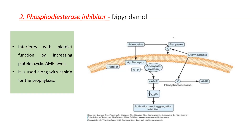The second class is phosphodiesterase inhibitors; the example is dipyridamole. Dipyridamole inhibits phosphodiesterase, which is involved in the breakdown of cyclic AMP to AMP. By inhibiting phosphodiesterase, there is an increase in the level of cyclic AMP, which ultimately interferes with platelet function. Dipyridamole also inhibits the cellular reuptake of adenosine into platelets, RBCs, and endothelial cells, leading to increased extracellular concentration of adenosine and thereby interfering with platelet activation and aggregation. Dipyridamole is used along with aspirin for prophylaxis.